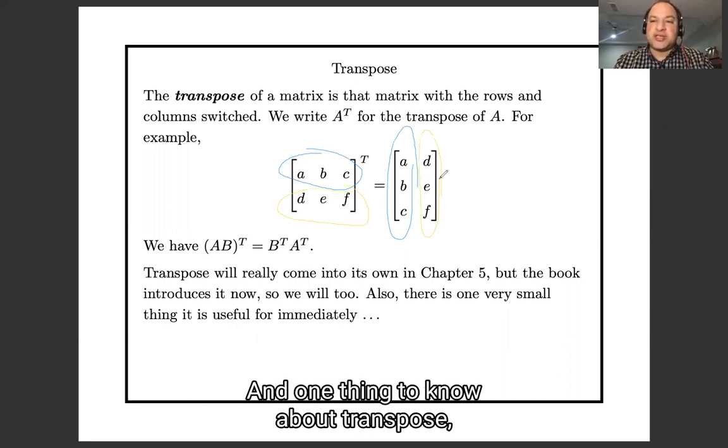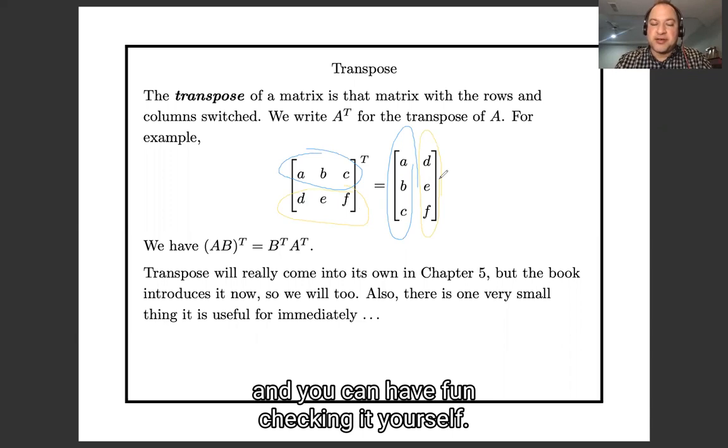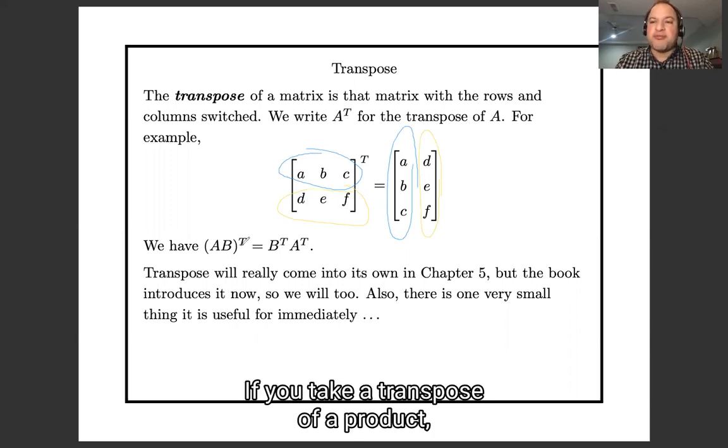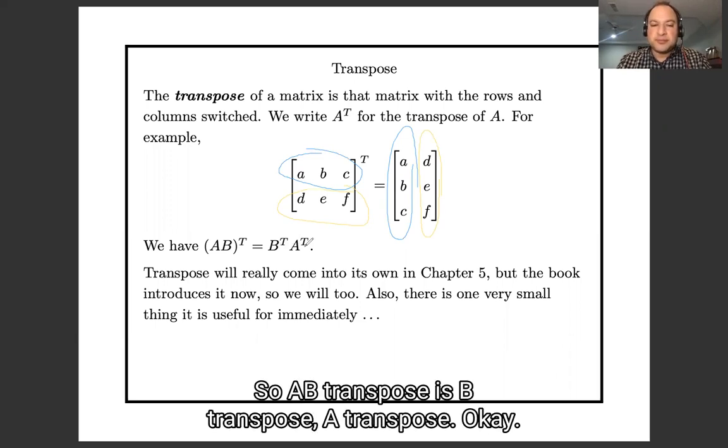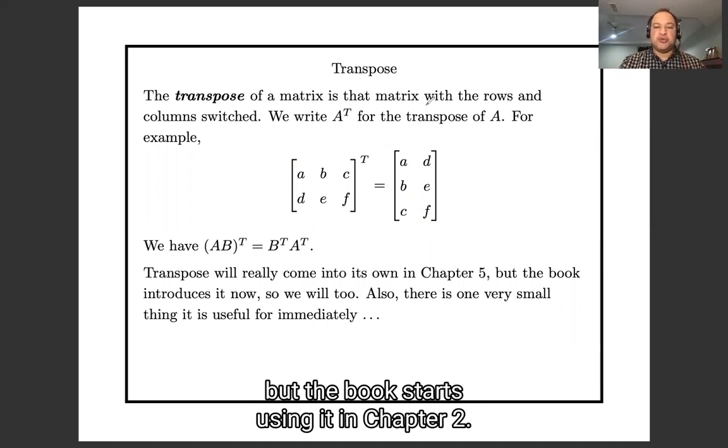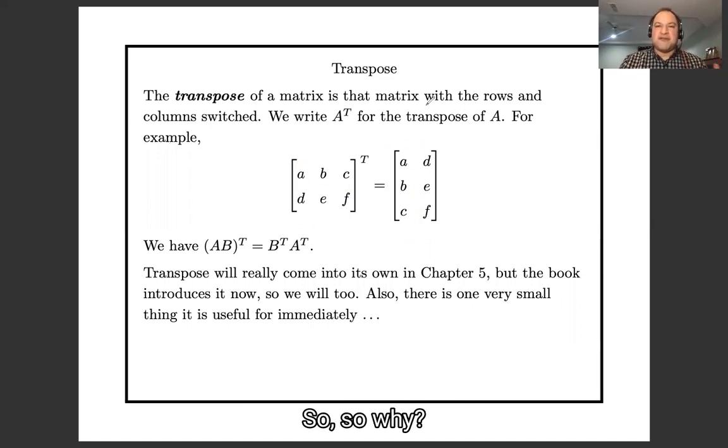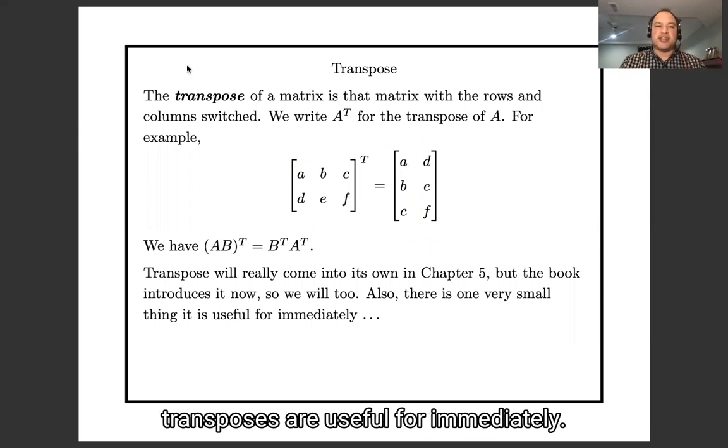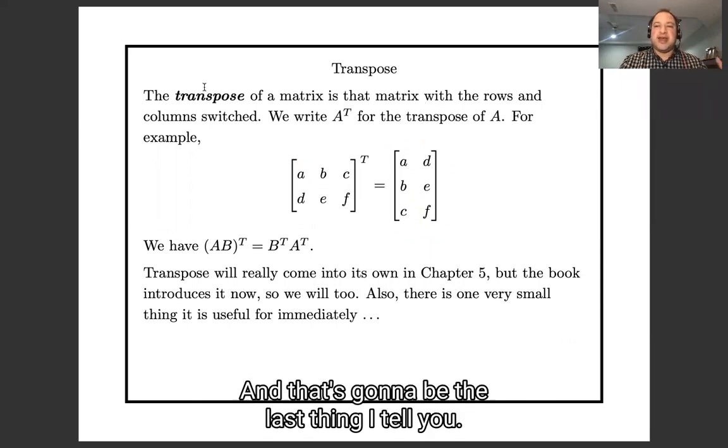And one thing to know about transpose - and you can have fun checking this yourself - if you take the transpose of a product, you get back a product of the transposes in the other order. So AB transpose is B transpose A transpose. Okay, we're really going to start seriously using transpose in Chapter 5, but the book starts using it in Chapter 2.